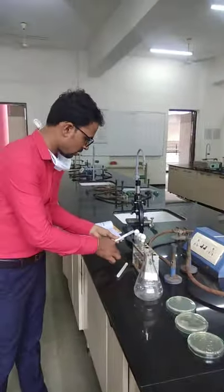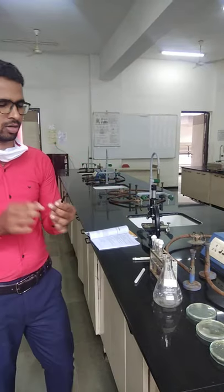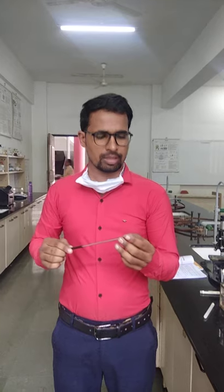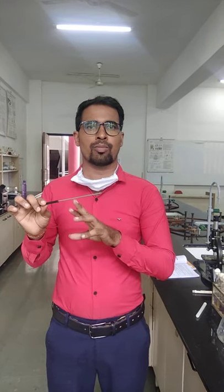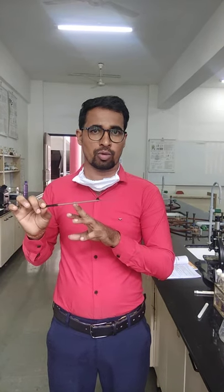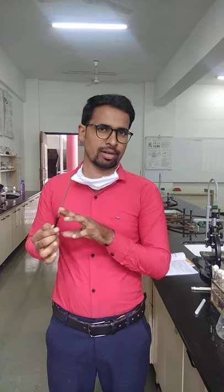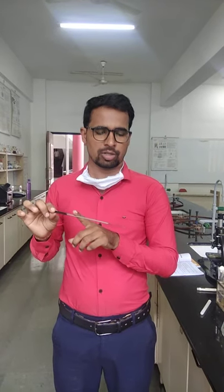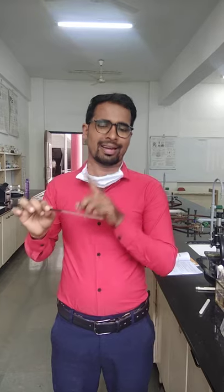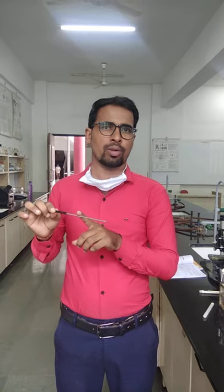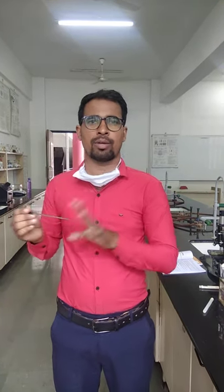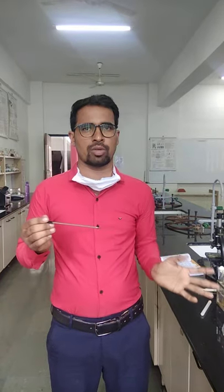We will take the very first instrument, or you can say apparatus. This is the nichrome wire. We already studied it in the theory part. So this is made up of nichrome, that's why it is called as the nichrome wire, and it has a role for the transfer of microbial flora from one place to another.